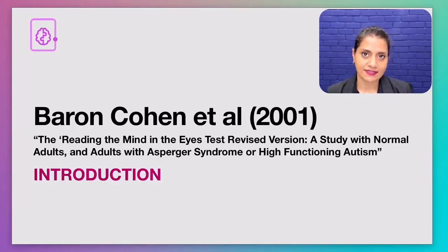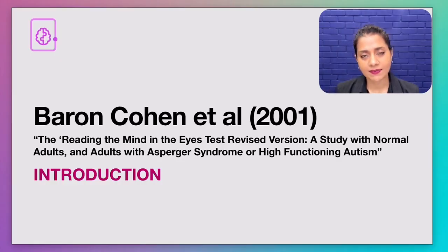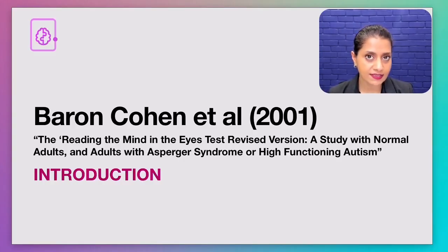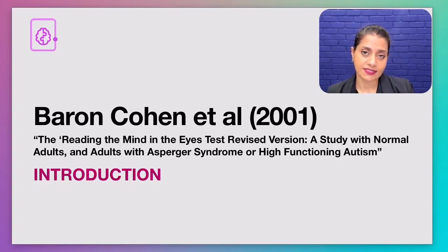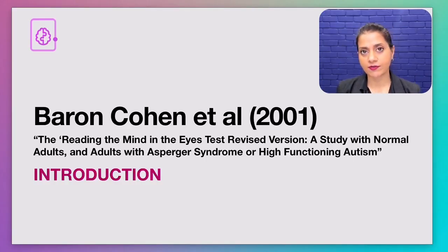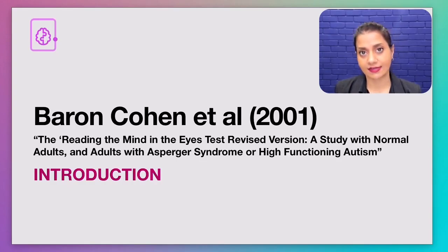Welcome to this series of lessons on Baron Cohen's study done in 2001. The purpose of this study was to use the revised Eyes Test to determine how effective the test was when used with people who have high functioning autism or Asperger's syndrome, when they are trying to determine somebody else's mental state, which is also called theory of mind. In this particular lesson I'll give you a broad overview of that study and talk about the key terms, and then we'll move on to the more detailed lessons.